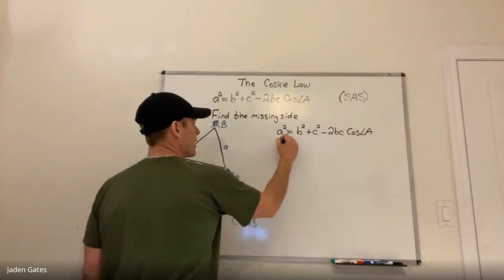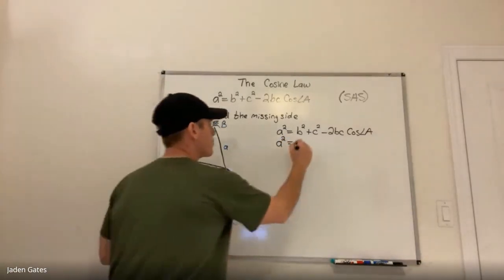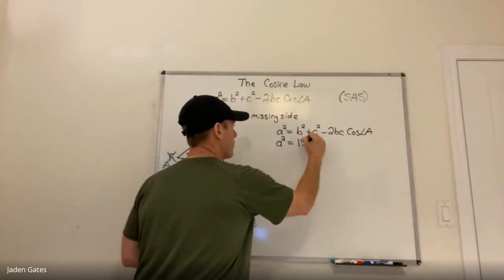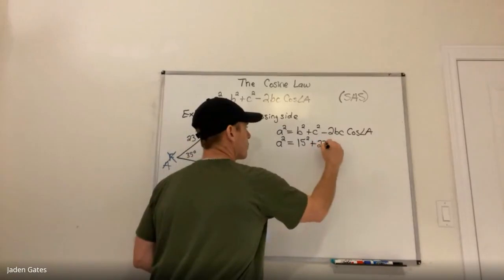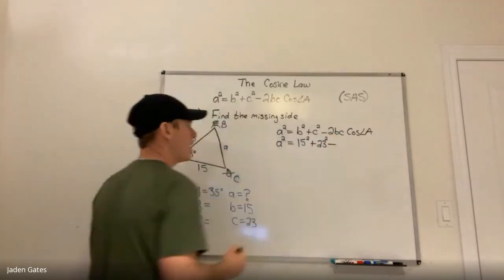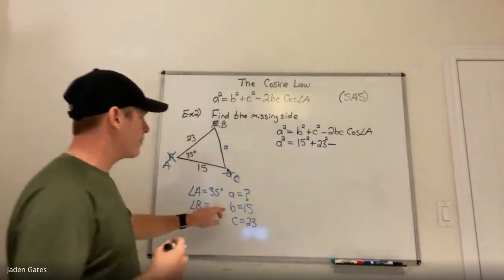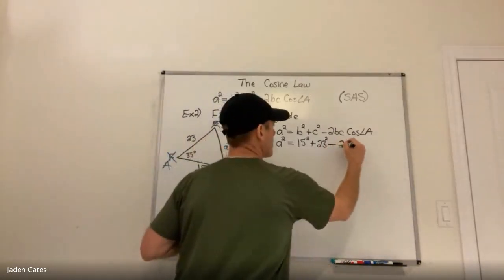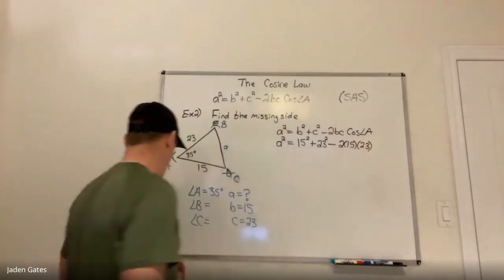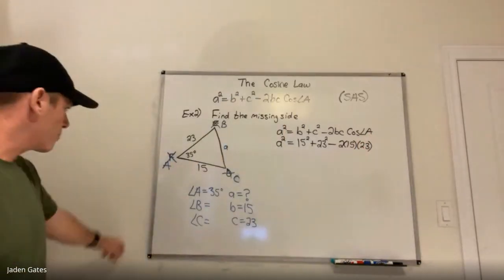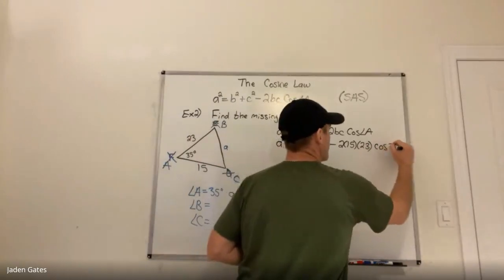Substituting in my numbers: A squared equals — b is 15, so b squared is 15 squared; c is 23, so 23 squared. Then minus 2 times 15 times 23 times cosine of 35 degrees.